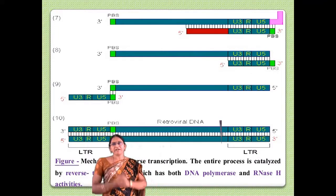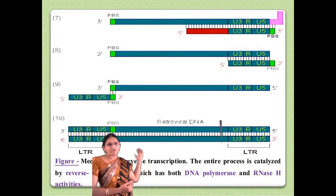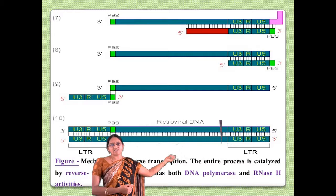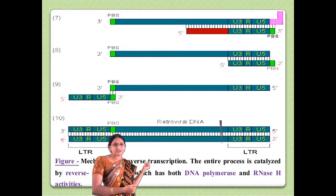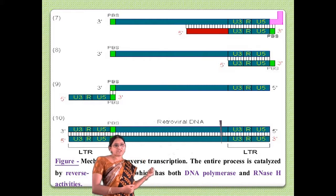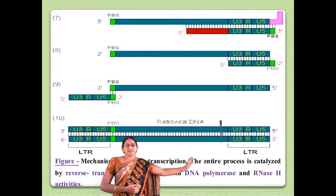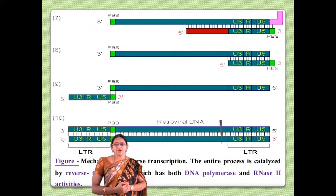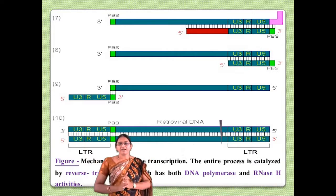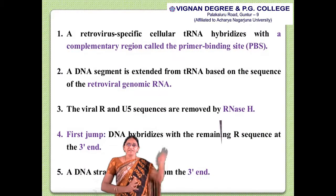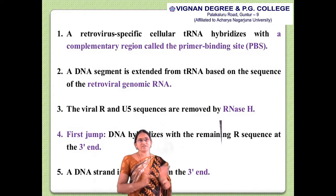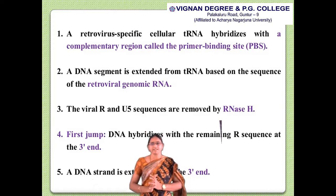In the next step — the second jump — the segment of the DNA jumps from the 3' end to the 5' location. The DNA produced at the 3' end of the first strand is displaced and hybridizes with the primer binding site of the other strand. From there, DNA strand synthesis occurs, both strands are completed, and double-stranded DNA is produced consisting of long terminal repeats at their ends.